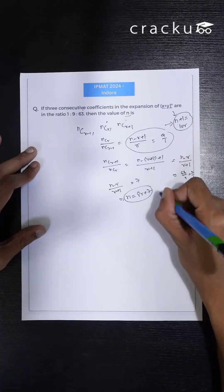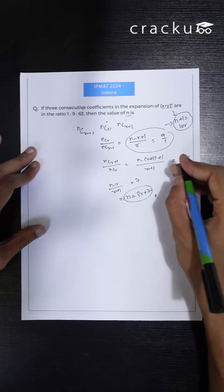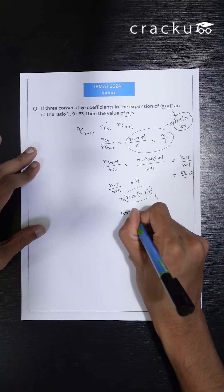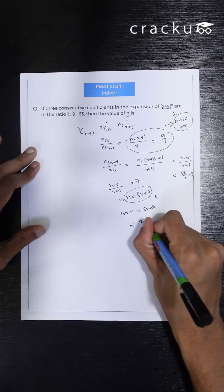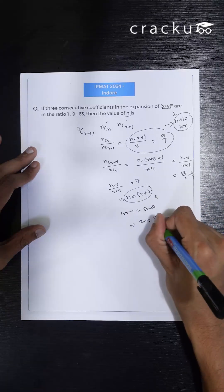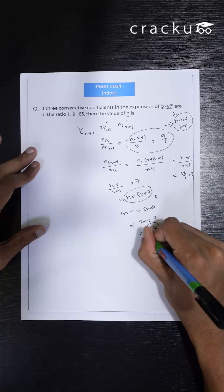So from these two equations I can equate the value of n. From here n value is 10r-1, from here n value is 8r+7. So I can write 10r-8r which is 2r equals to 1+7 which is 8. So r = 8/2 which is 4.